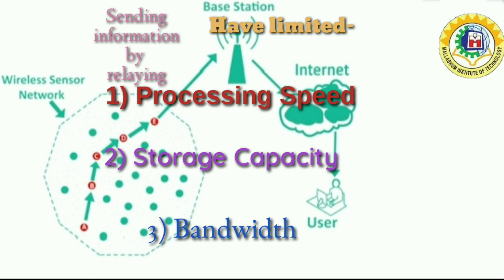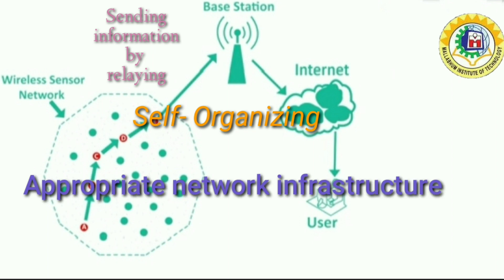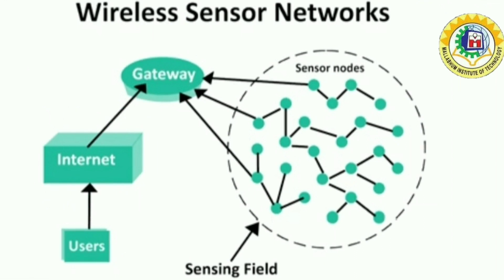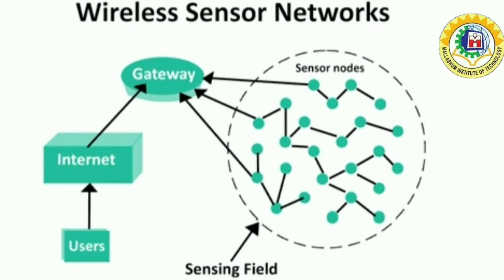After the sensor nodes are deployed, they are responsible for self-organizing an appropriate network infrastructure. The onboard sensors start collecting information of interest. Wireless sensor devices also respond to queries sent from a control site to perform specific instructions or provide sensing samples. The working mode of the sensor nodes may be either continuous or event-driven. A sink or base station acts as an interface between users and the network, allowing retrieval of required information by injecting queries and gathering results from the sink.